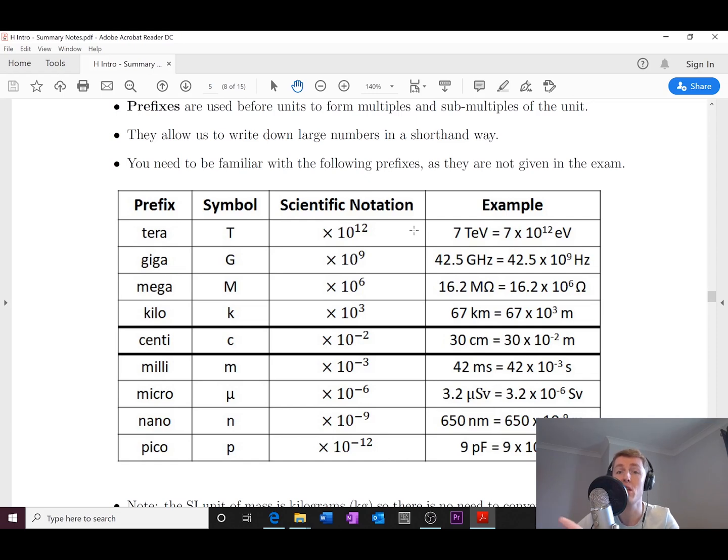And the new one is tera. So we tend to use tera when we're talking about energies and particle collisions, when we're talking about particle accelerators and the Large Hadron Collider. So you'll see an example is 7 tera electron volts is 7 times 10 to the 12 electron volts, which is just a different unit of energy rather than joules.